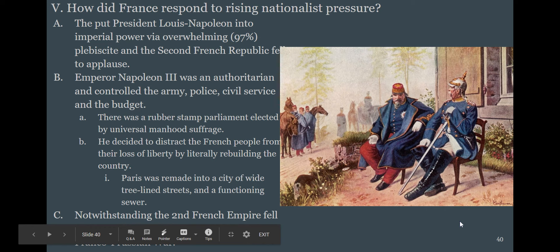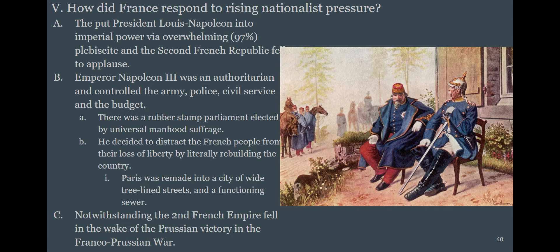France responds to rising nationalist pressure by basically becoming a dictatorship. Louis Napoleon — the first president of the French Republic, now a dictator — gets 97% of the vote to become emperor. He rebuilds Paris into the beautiful city it is today, funding railroads, sewers, and infrastructure through an authoritarian state where the emperor controls the police, the army, and the budget. Louis gets captured by Kaiser Wilhelm in the Franco-Prussian War, and the Second French Empire collapses spectacularly.